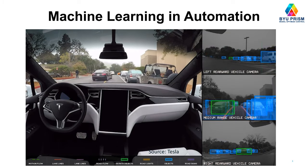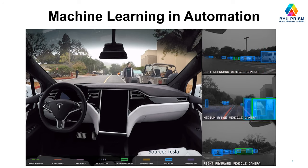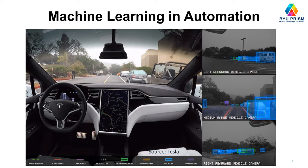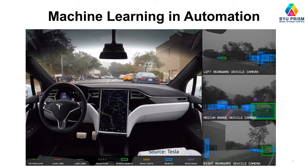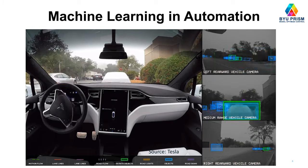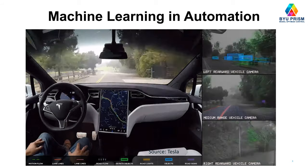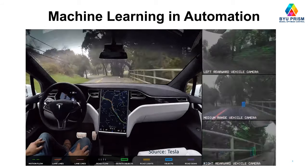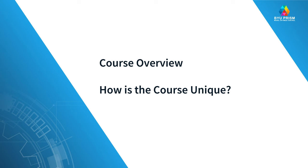At a certain point, the driver leaves the vehicle and the car goes to find a parking spot. It identifies a parking spot and is able to park until the driver leaves the building again and summons the vehicle. So in this course, we're going to talk first of all about an overview, but also mention some things about how this course is unique.